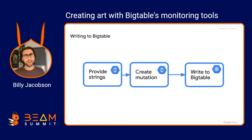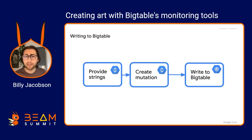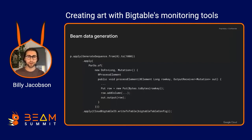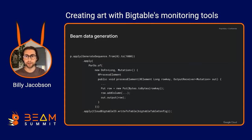What I found to be most useful was to use generate sequence. I would use this to send pulses — here I do from zero to 1,000, basically sending 1,000 pulses to start the pipeline and generate data. I can use that input to maybe generate a row key or do some other kind of data generation.